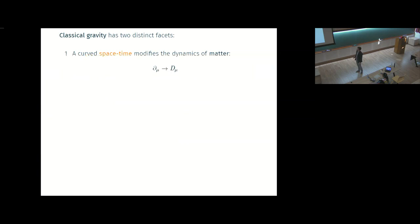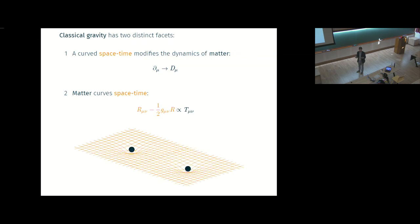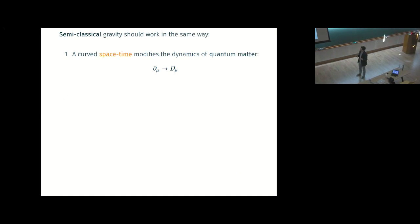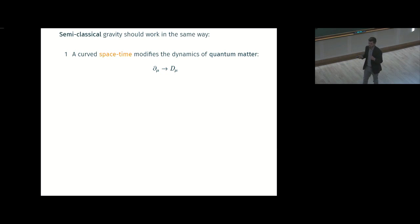So classical gravity, you clearly have two different facets. The first one is you have space-time that modifies the dynamics of matter, and then you have matter that curves space-time, so the two back-react on each other. When you want to make semi-classical gravity, you have a curved space-time that modifies the dynamics of quantum matter.